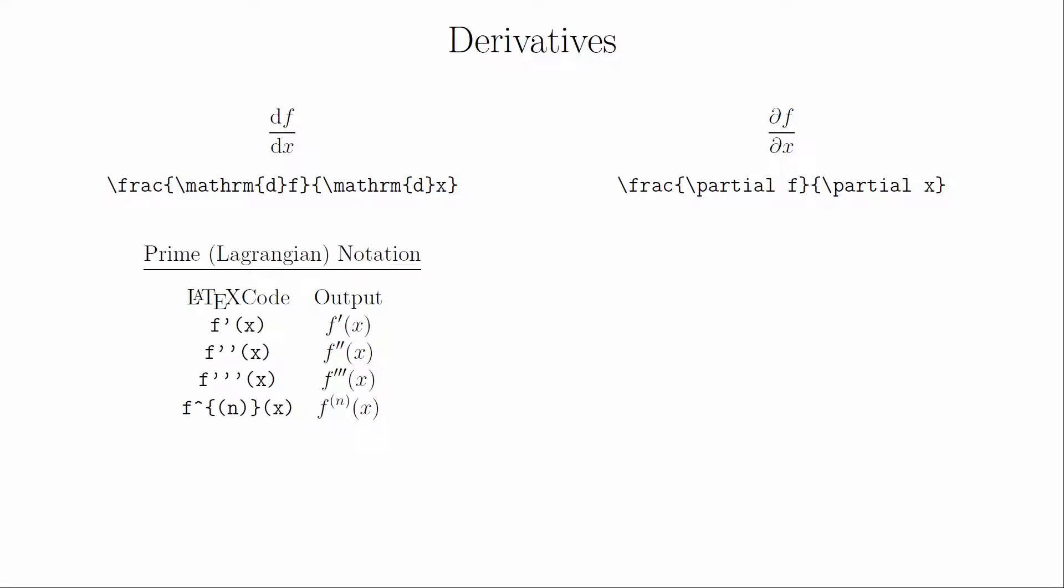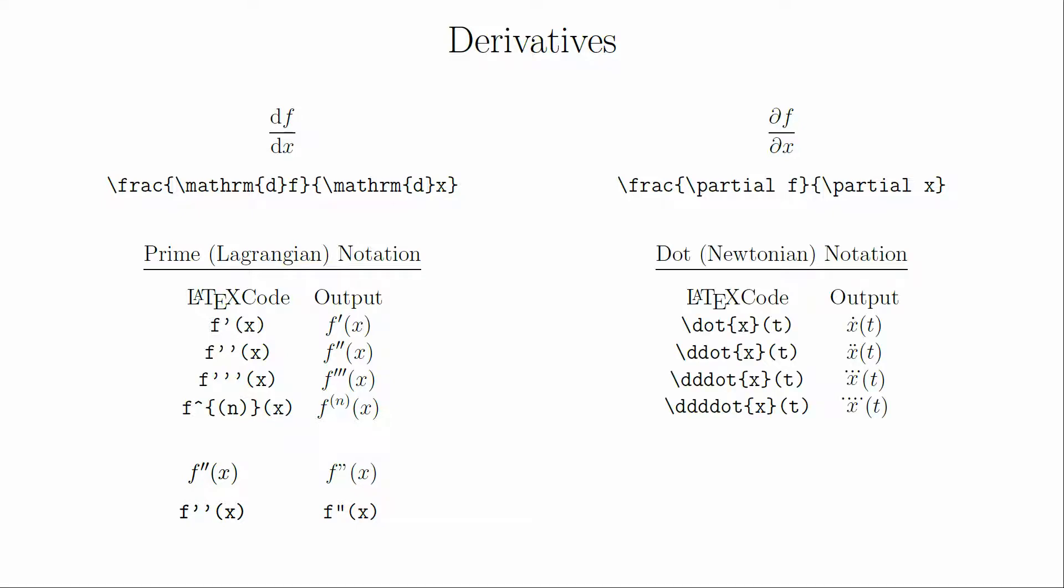Next, we'll look at some notation for derivatives. We've already pointed out the upright D that some people prefer for derivatives. The symbol for partial derivatives is partial. If you want to use the prime notation for derivatives, you will want to use an apostrophe for each derivative. And the general nth derivative notation is drawn using superscript notation. Avoid using the double quote for the second derivative. LaTeX will draw it differently and your notation will be inconsistent. The dot notation for derivatives is created by using these commands. You can only go up to four dots with this notation, but in practice you will probably never need that many anyway.